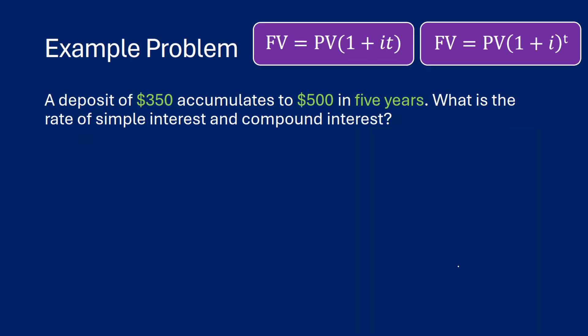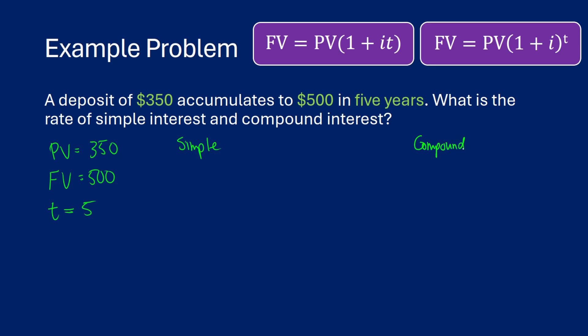For the second problem, suppose we deposit $350 — that's our present value — and it accumulates to $500 in five years, which is our future value. Our t equals five. We need to find the rate of simple interest and compound interest to achieve this, so we're solving for i.